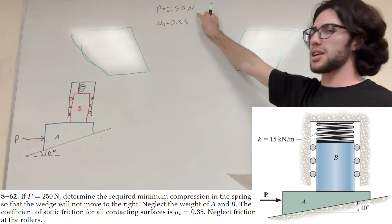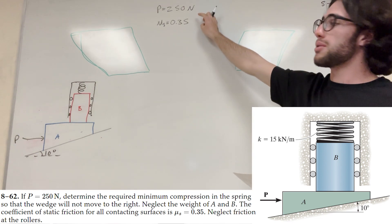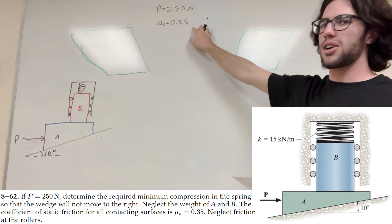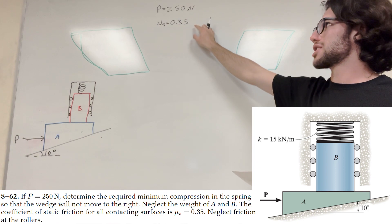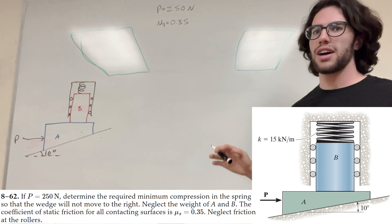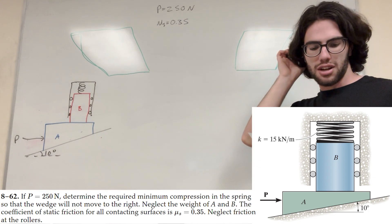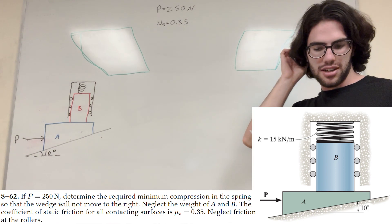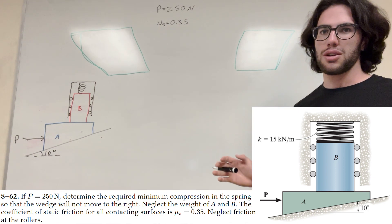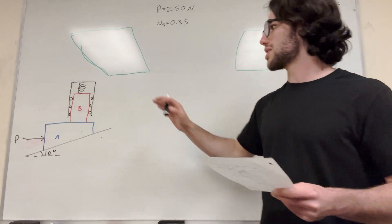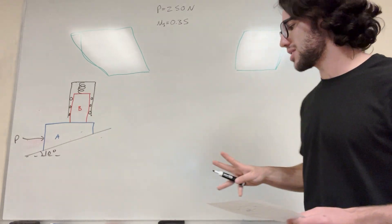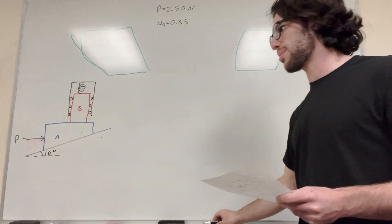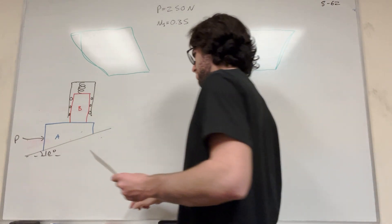So we have that P is equal to 250 newtons, and then our coefficient of static friction is 0.35. So what we want to do is go ahead and separate these two blocks into their own separate systems and draw force body diagrams.